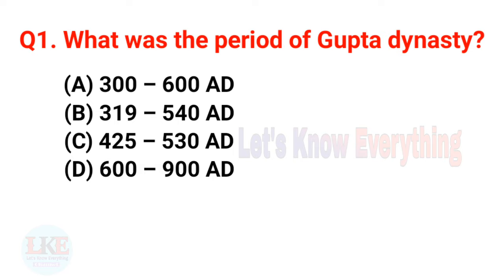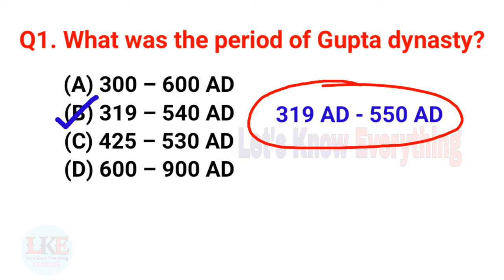Question 1: What was the period of Gupta dynasty history? The right answer is option B — 319 AD to 540 AD. Friends, remember that sometimes you may also see 319 AD to 550 AD in the options, and that is also correct.